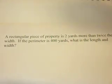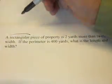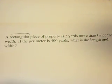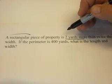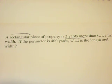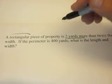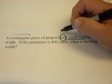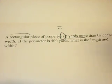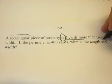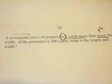We know a couple things. We know we're dealing with a rectangle, and the length is two yards more than twice the width. If you've got the word 'is' in a word problem, the word 'is' means equal — that's the equal sign. And if you're talking about twice something, you're multiplying by two. If you're three times something, you multiply by three, just like it says.